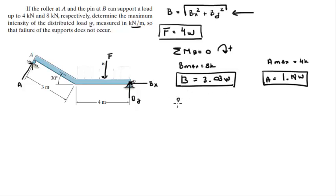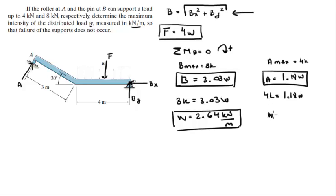So they're both going to give you a weight as you can see. So if B is equal to 8K, 8K is equal to 3.03 W which means that the weight would come out to be 2.64 kN per meter. That's the weight. Now if A is equal to 4K, 1.18 W then according to this one W is equal to 3.39 kN per meter.